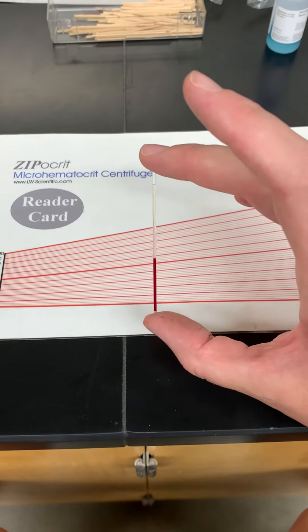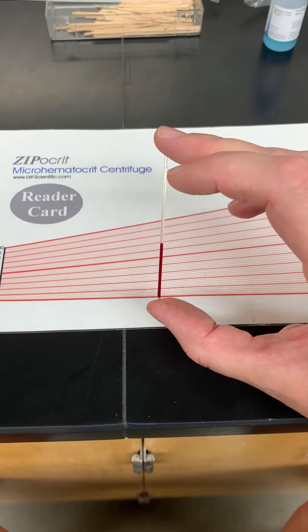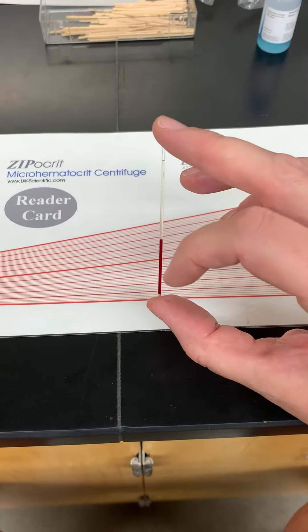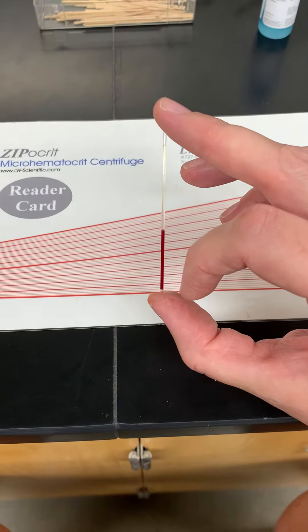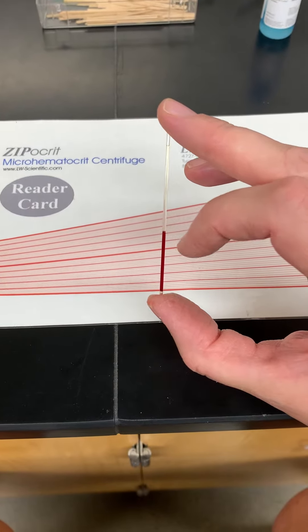How do you do a hematocrit? You take a capillary tube, fill it with blood, or pull up blood until it's almost full. Then you cap the bottom with clay, stick it in the centrifuge with the clay side out, spin it down, and the red blood cells will be packed at the bottom of the capillary tube.